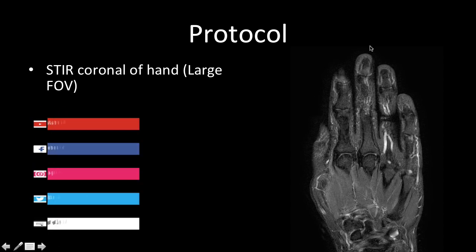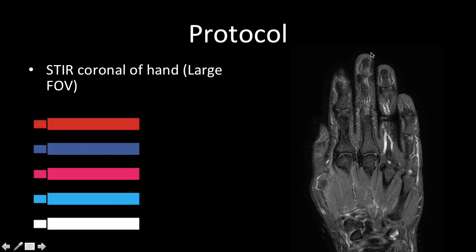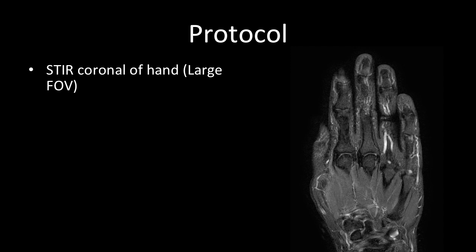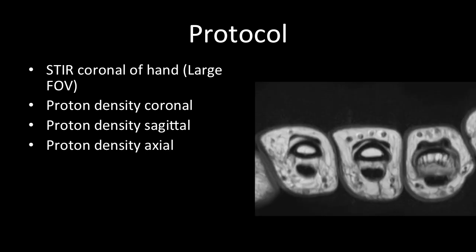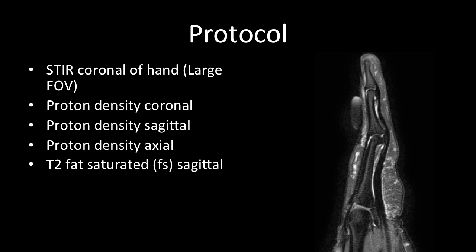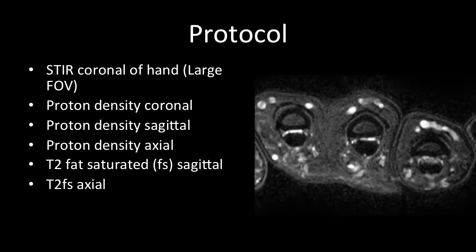Coming to the protocol: first obtain a large FOV image of the finger to look for bone, soft tissue edema, and areas of abnormality. Once you know the area of abnormality, obtain the rest of the scan with small FOV images. The sequence includes a proton density coronal image in small FOV covering from the fingertip to the distal shaft of the metacarpal, then proton density sagittal, proton density axial, T2 fat-saturated sagittal, and T2 fat-saturated axial images.